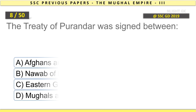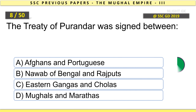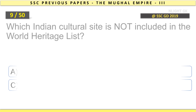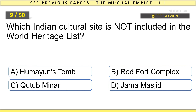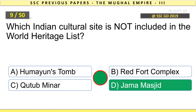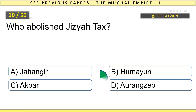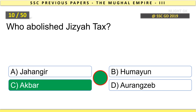The Treaty of Purandar was signed between Mughals and Marathas. Which Indian cultural site is not included in the World Heritage List? Jama Masjid. Who abolished Jizya tax? Akbar.